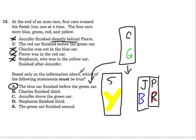Based only on the information above, which of the following statements has to be true? And that's A. The blue car finished before the green car. The green car could be in two spots, but in both cases it's behind the blue car.